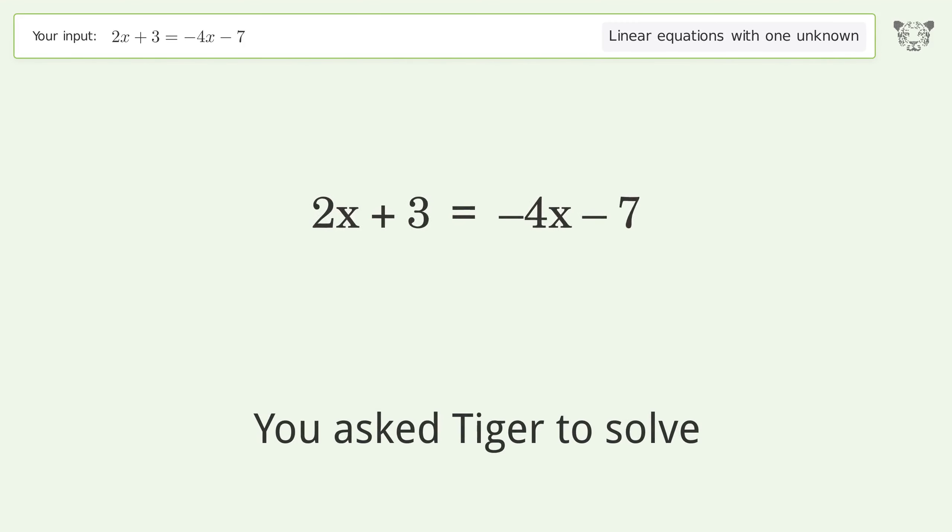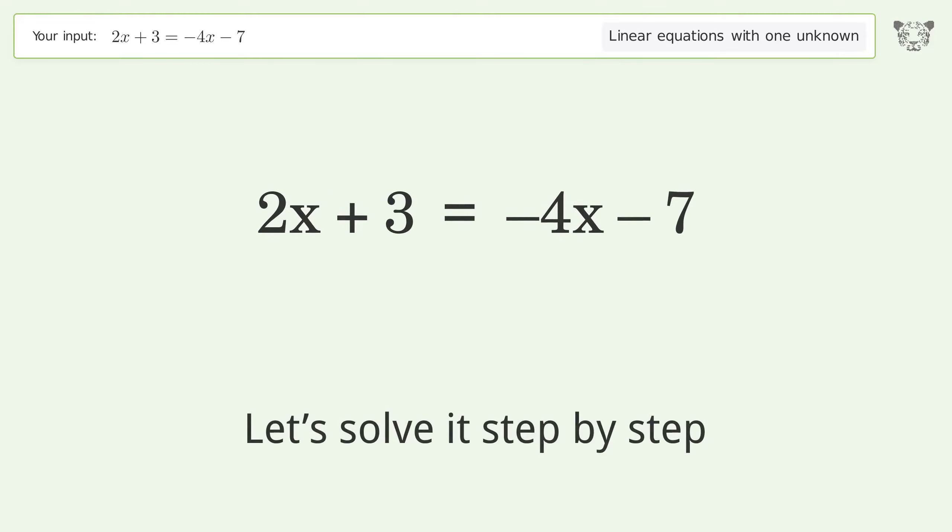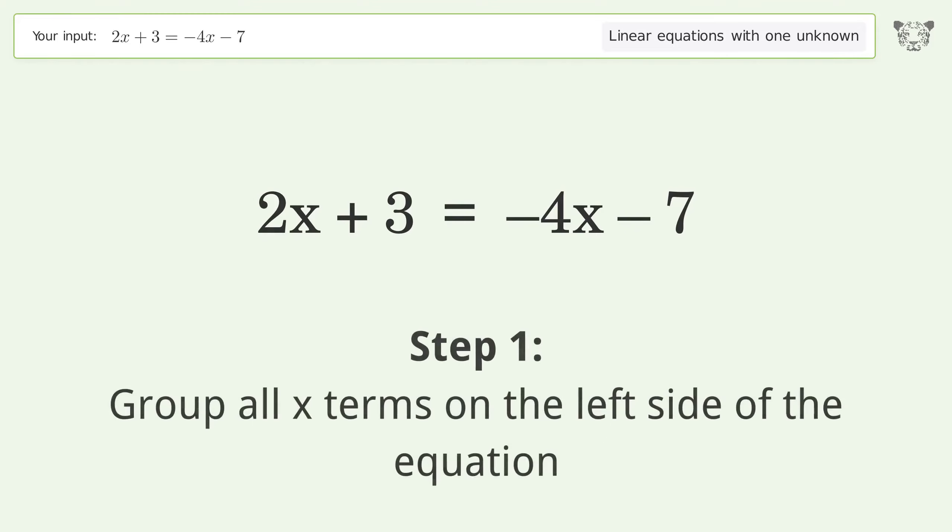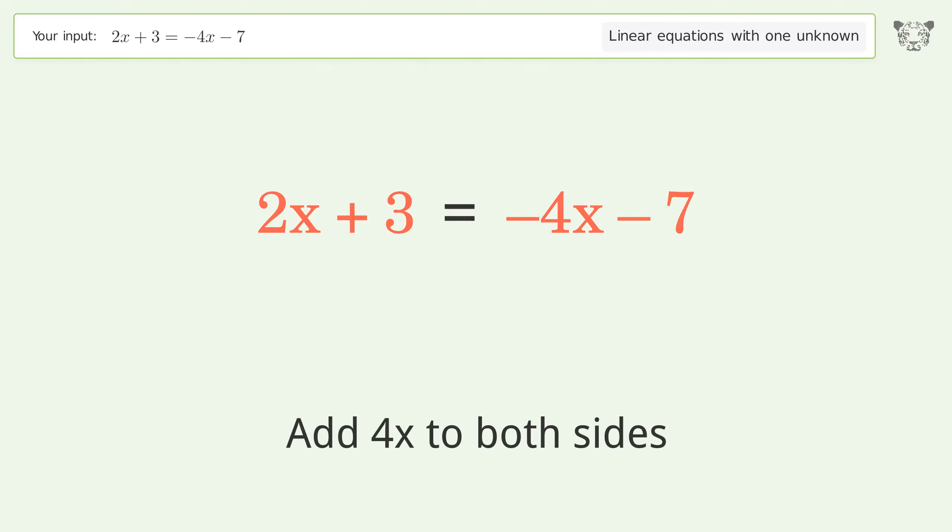You asked Tiger to solve this. This deals with linear equations with one unknown. The final result is x equals negative 5 over 3. Let's solve it step by step. Group all x terms on the left side of the equation. Add 4x to both sides.